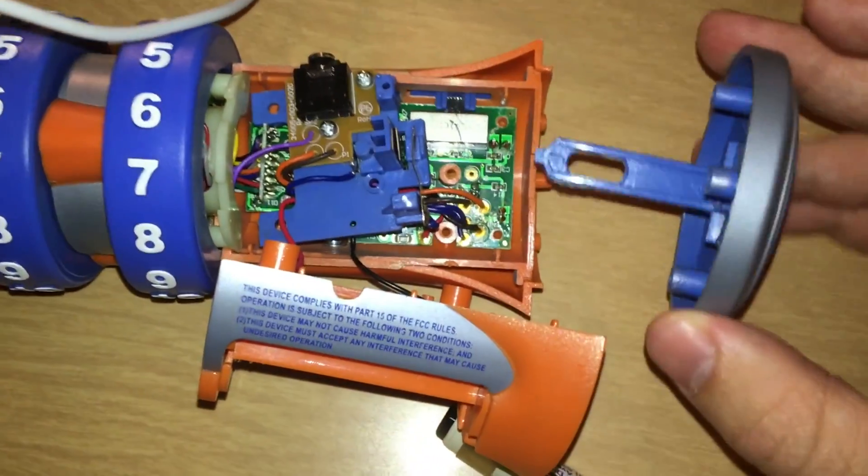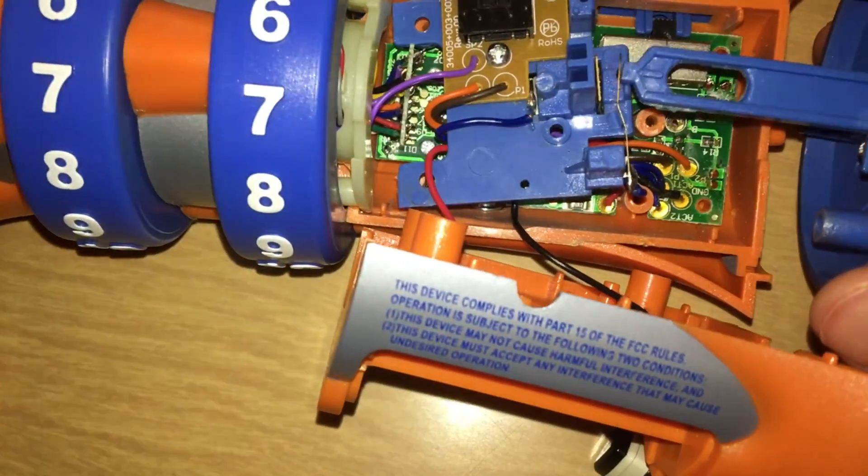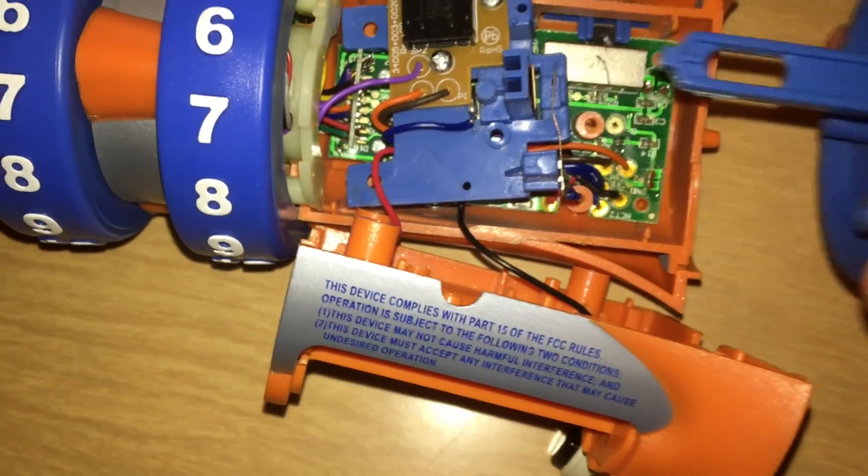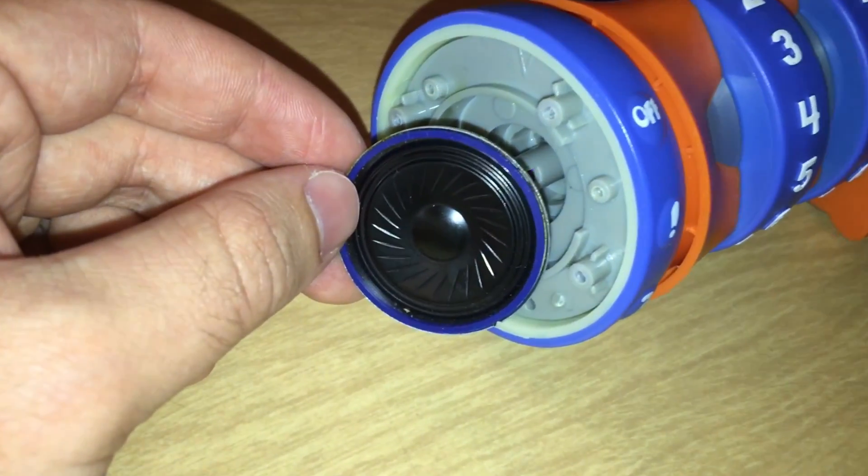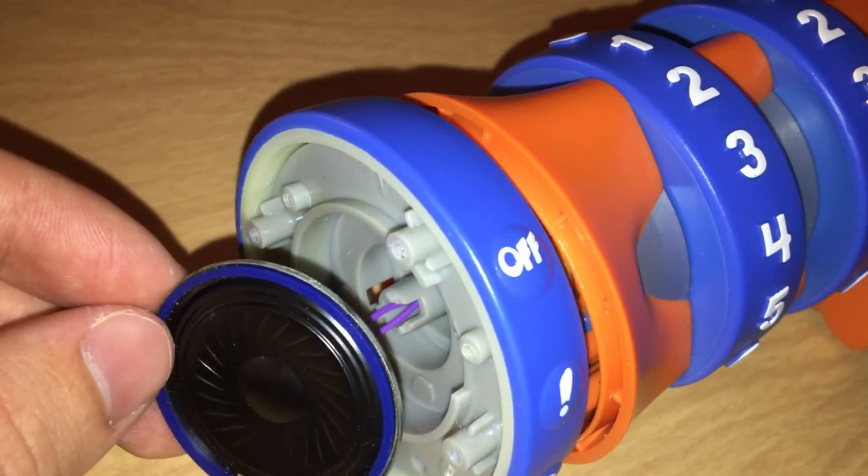The way the button works is as it's pressed into the device, it's connecting these two metal strips right here, which sends feedback to the circuit board. The speaker just puts out sound based on what the circuit board tells it to.